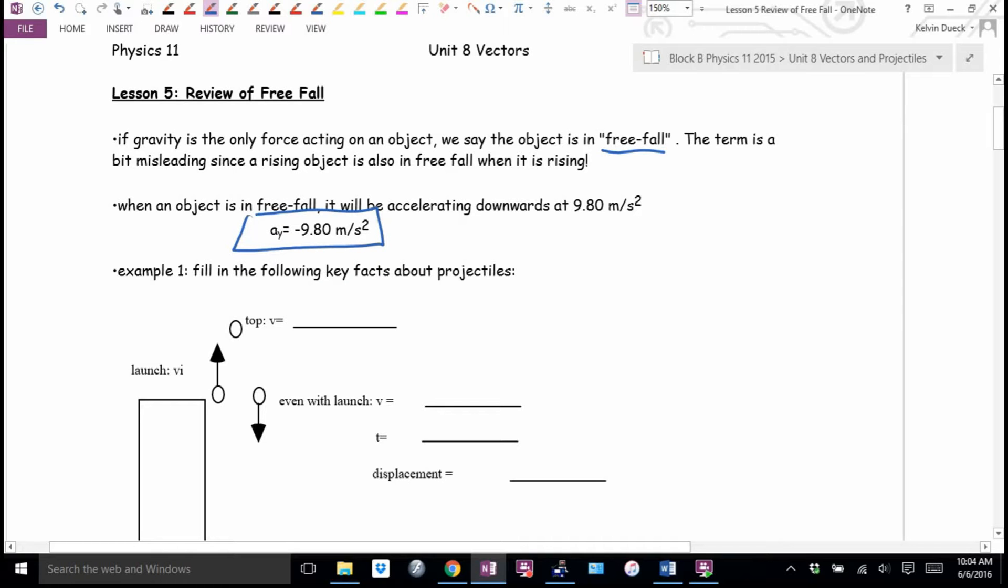When an object is in free fall, it will be accelerating downwards at 9.8 meters per second squared. If we want to put a direction in, you can call it negative. And you'll notice this time I wrote A with a little subscripted Y. That's my abbreviation for vertical, and that's a lead-in to next lesson when we're going to have a horizontal, which I'll symbolize with X and a vertical component, when we start to look sideways through the air.